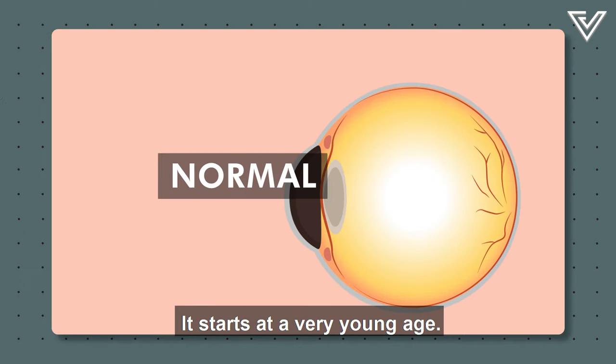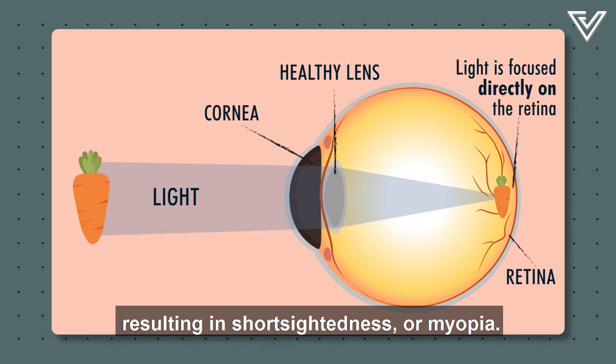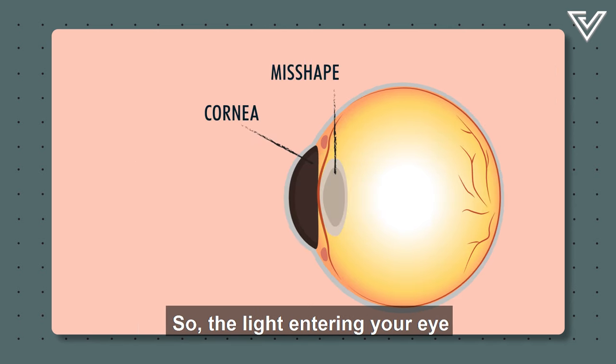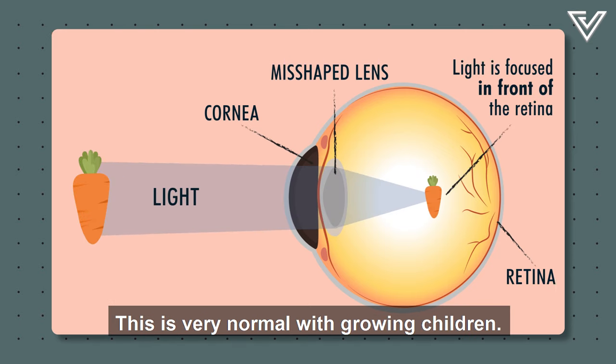It starts at a very young age. Your physical growth during childhood can elongate your eyeball, resulting in short-sightedness or myopia. So, the light entering your eye isn't focused correctly, and distant objects look blurred. This is very normal with growing children.